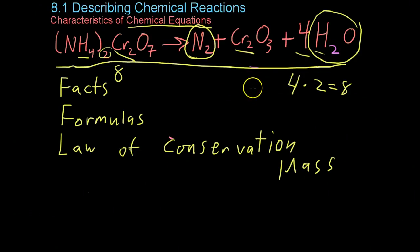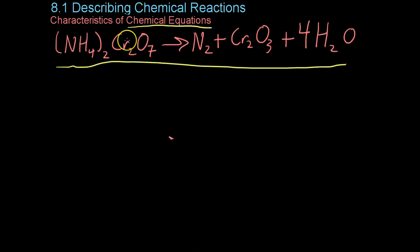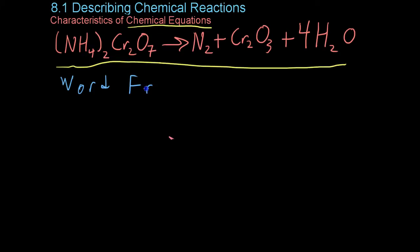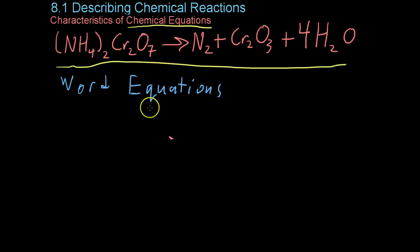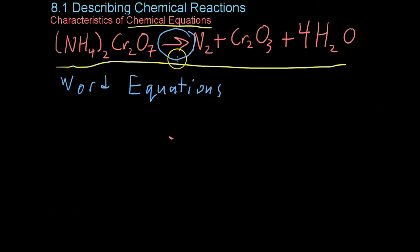Similar to these chemical equations, you can also write what are known as word equations for a reaction. These just use the names of the reactants and products to give qualitative information without obeying the law of conservation of mass. For example, you would write ammonium dichromate, which I'm not going to write out because it is quite a long name for a chemical.